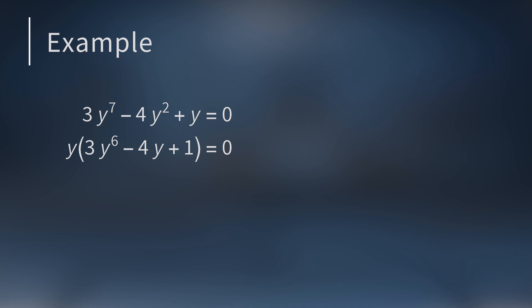For another example, look at the Diophantine equation 3y to the seventh minus 4y squared plus y equals 0. All the terms are on one side and the polynomial is in standard form, so the first step is done. We can factor out y, which gives us y times the quantity 3y to the sixth minus 4y plus 1 equals 0. Setting the first factor to 0 gives us one integer solution: y equals 0.